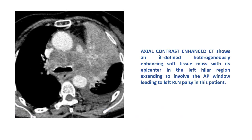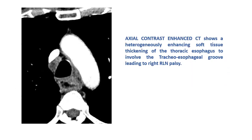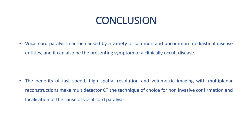The axial contrast-enhanced CT shows an ill-defined heterogeneously enhancing soft tissue mass with its epicenter in the left hilar region extending to involve the AP window, leading to a left recurrent laryngeal nerve palsy in this patient. Another axial contrast-enhanced CT shows heterogeneously enhancing soft tissue thickening of the thoracic esophagus involving the tracheoesophageal groove, leading to a right recurrent laryngeal nerve palsy.